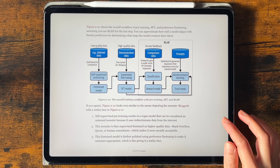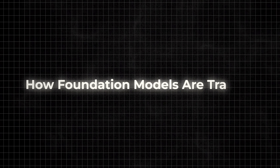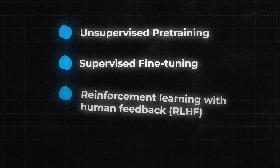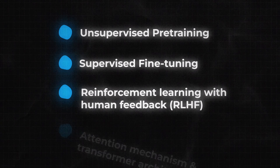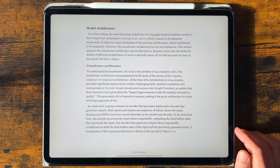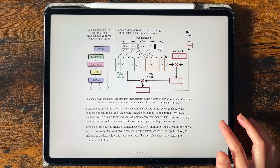After that, the book dives into more technical aspects including how foundation models are trained. It unpacks all the technical buzzwords like unsupervised pre-training, supervised fine-tuning, and reinforcement learning with human feedback. It also goes a bit more in depth into the attention mechanism and transformer architecture. Chip Huyen has tried her best to simplify the explanation, but some of these sections may feel a bit advanced if you're completely new to deep learning. In general though, you get the main ideas and a glimpse into how these modern AI models evolve.